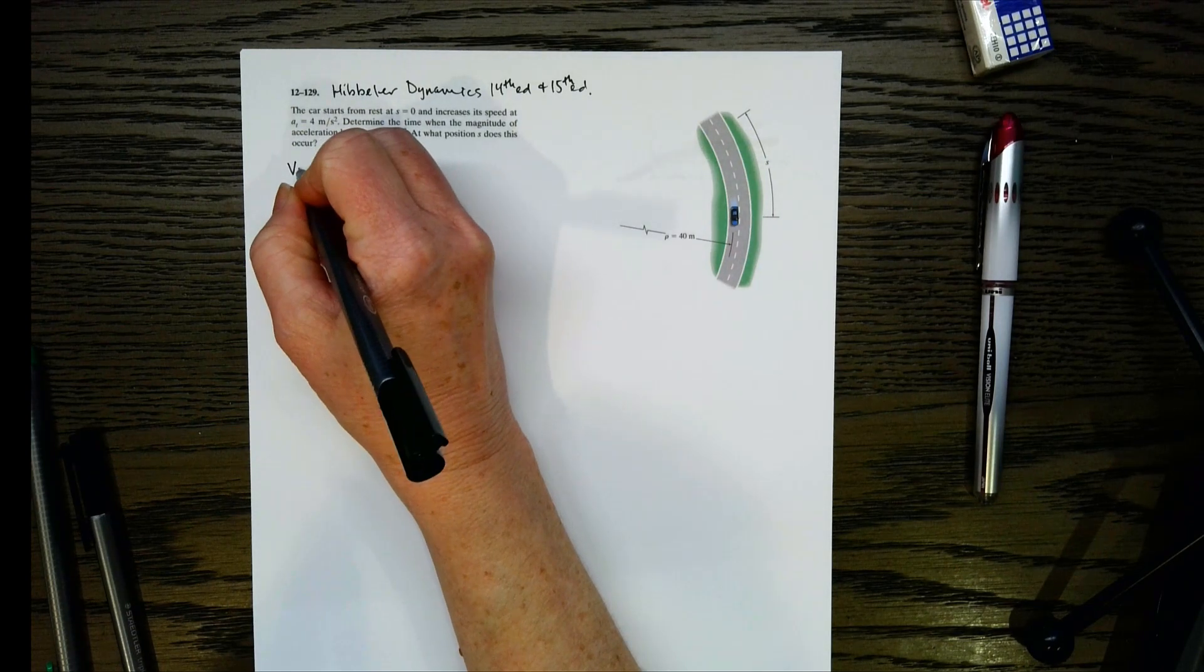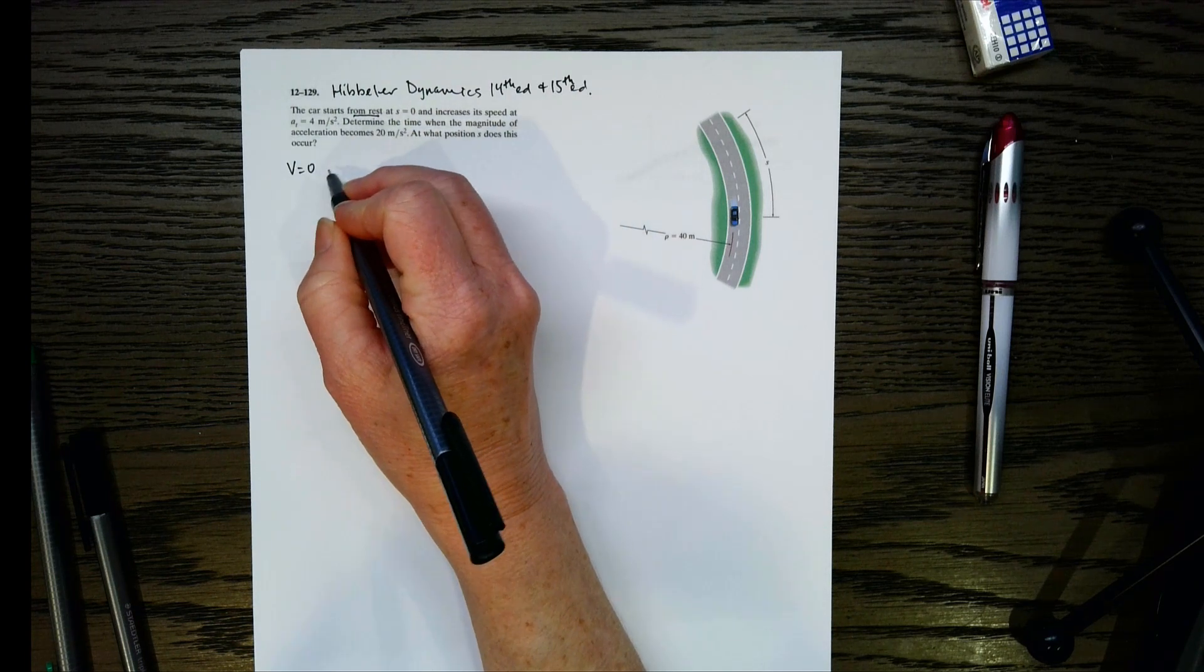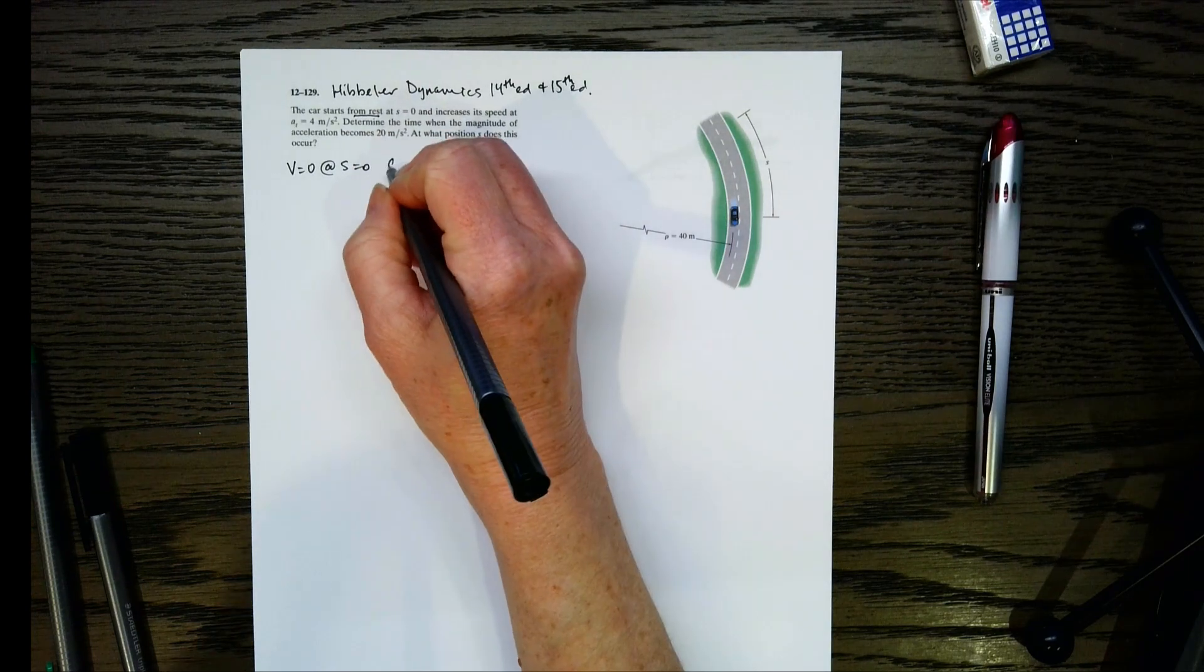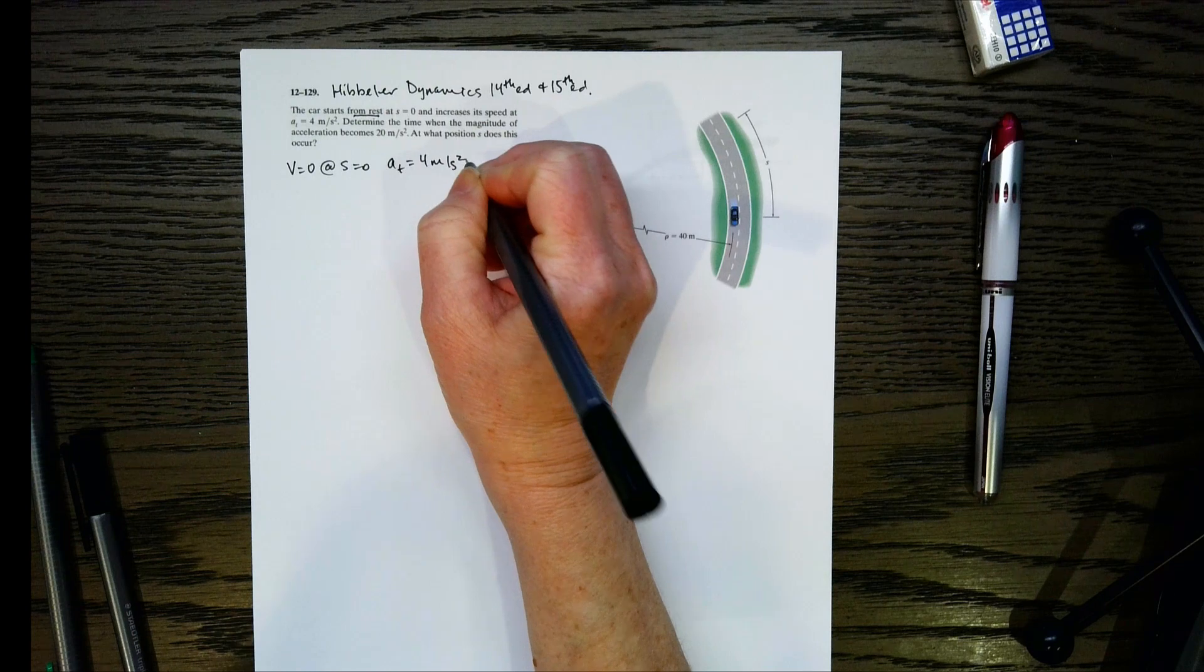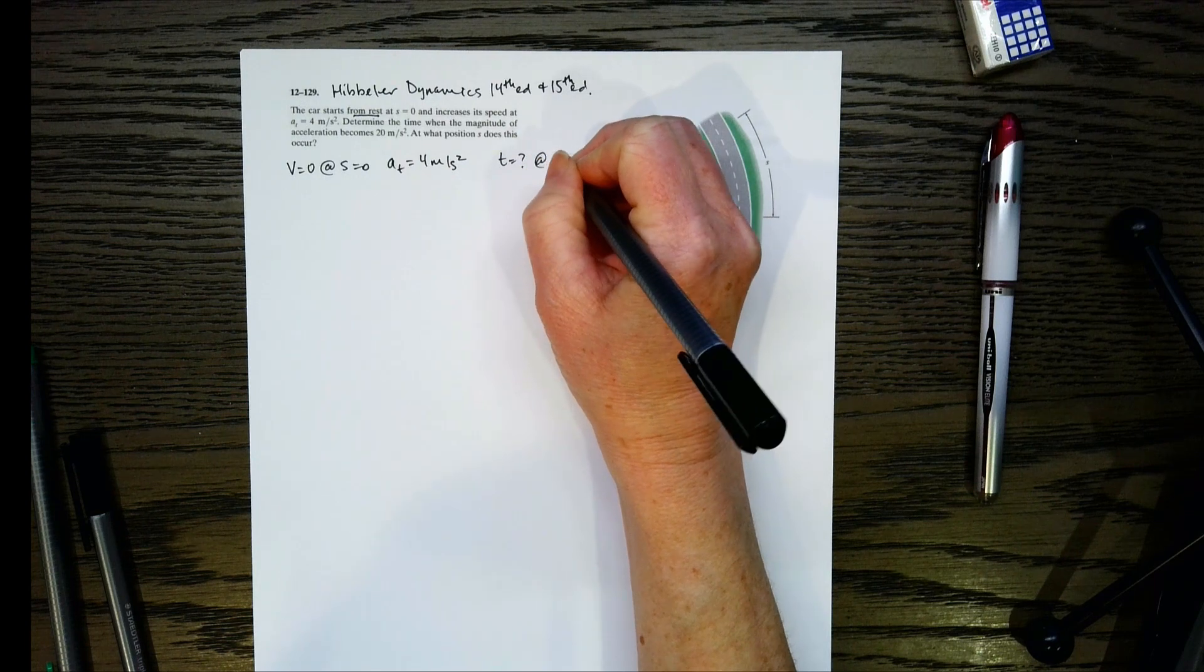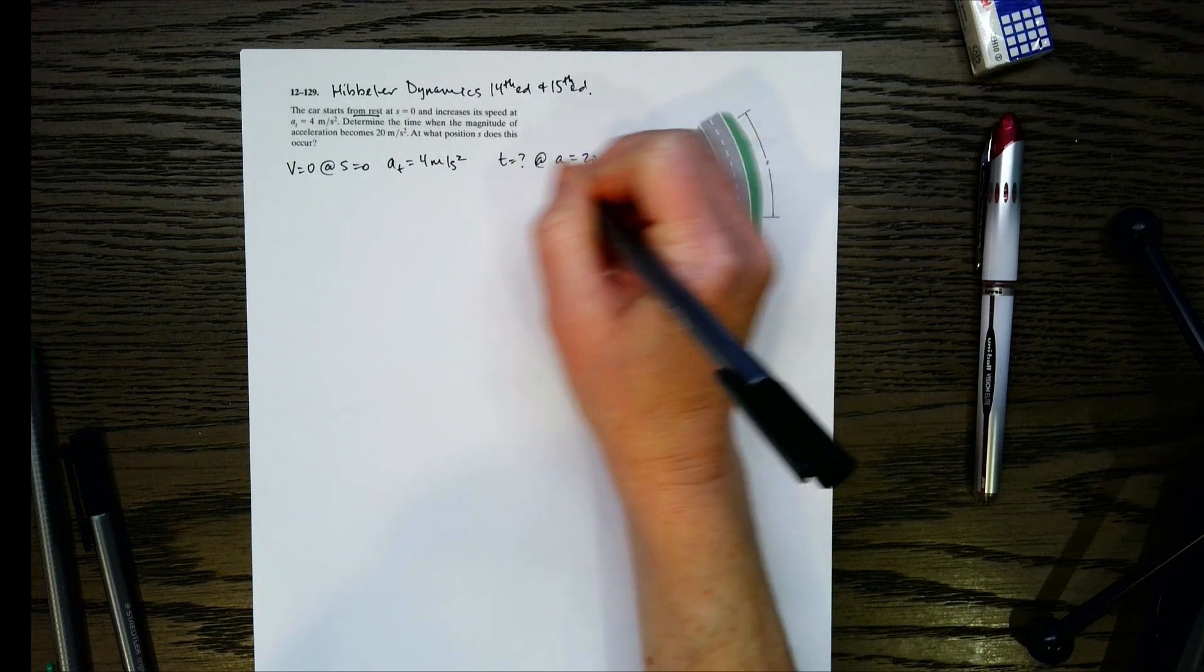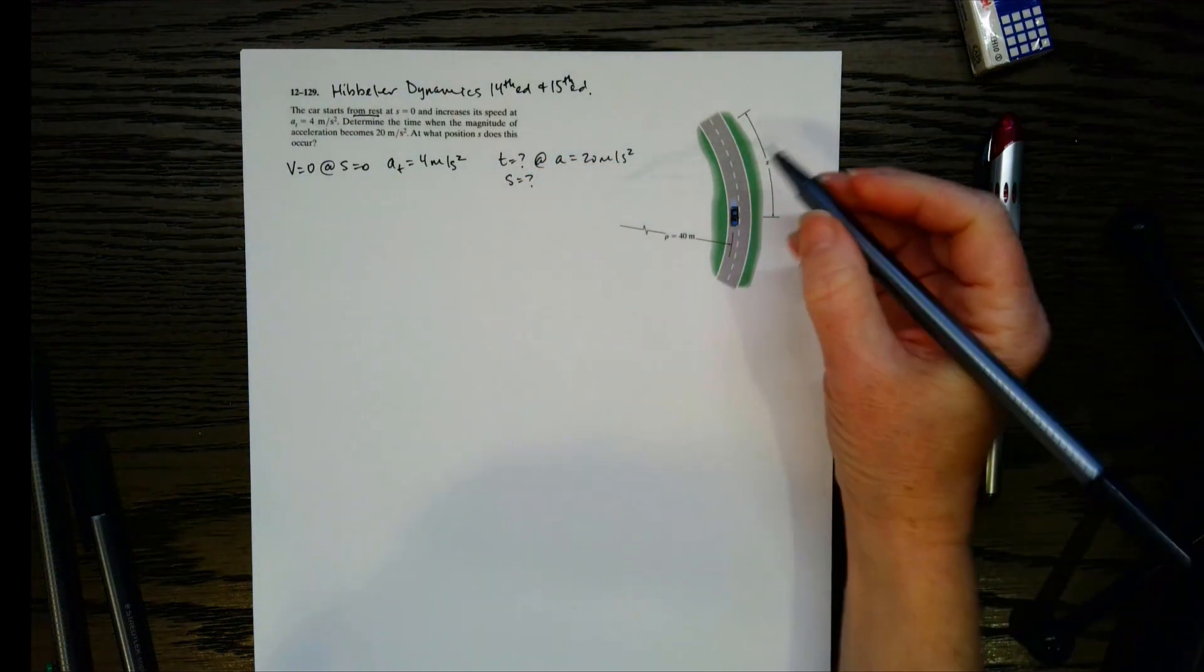So let's write down what we know. We start from rest, so v is going to be 0 when s is 0. We know our tangential acceleration, a sub t is 4 meters per second squared, and then I want to know the time when the magnitude of acceleration is 20 meters per second squared, and then we want to know s.